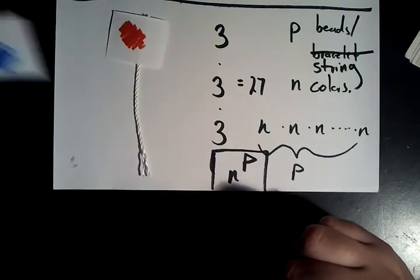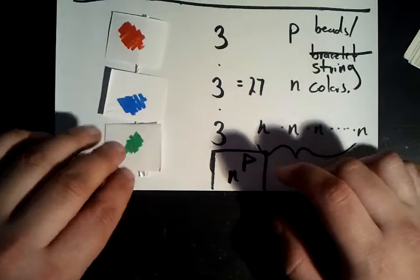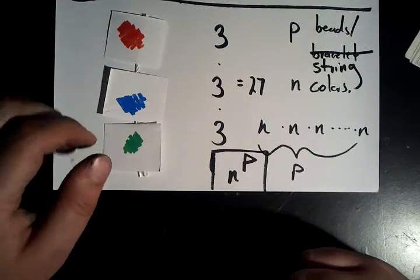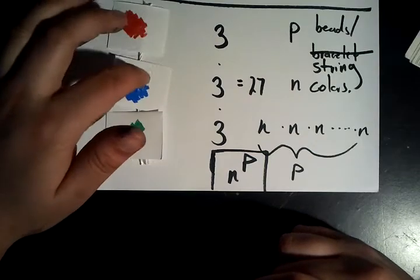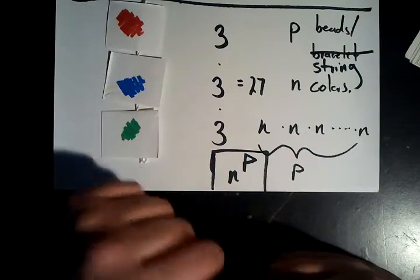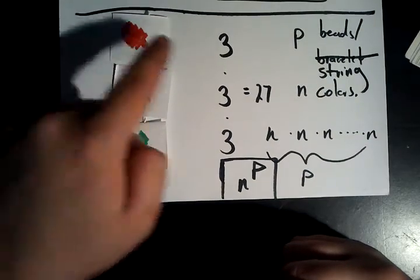So let's say each of these strings has three different beads on it. And we have three choices for each color: red, blue, or green. So for the first bead, how many choices do we have? Well, it could be either red, blue, or green. So three choices. Next one, three choices. Next one, three choices.